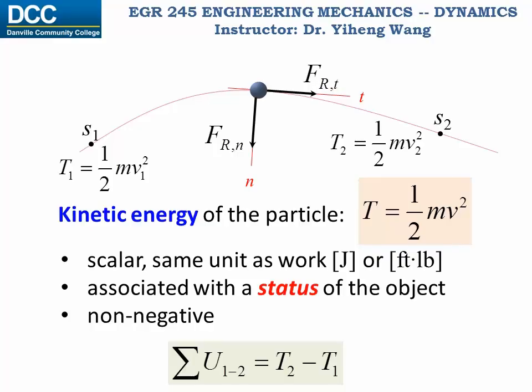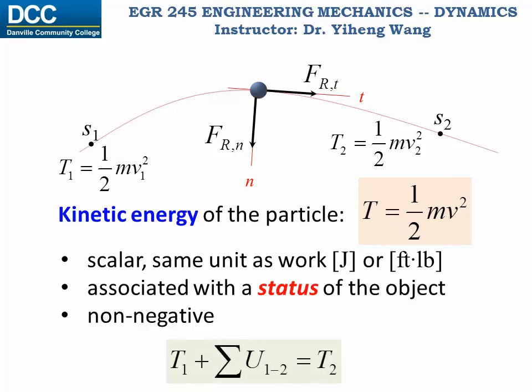In other words, the change in the particle's kinetic energy equals the total external work done to this particle. This can also be rewritten so that the initial kinetic energy of the particle plus the external work done during this process equals the final kinetic energy of the particle.